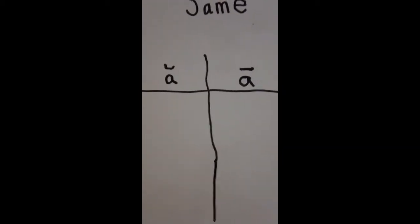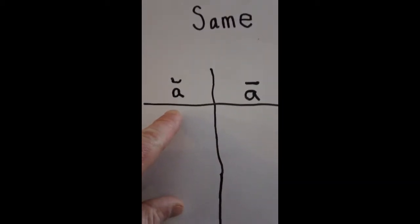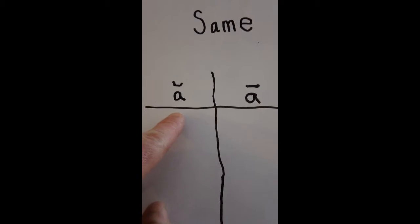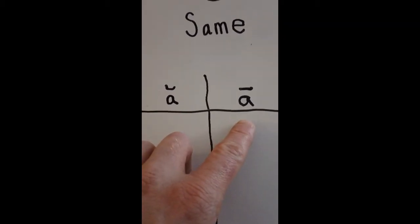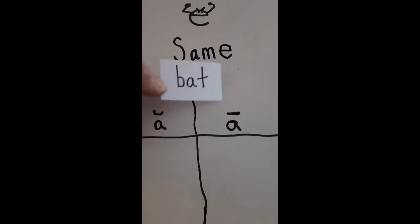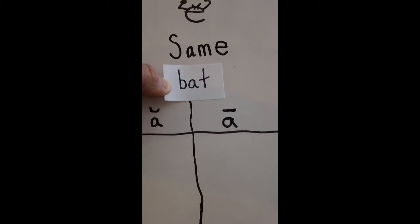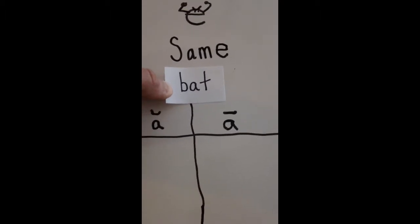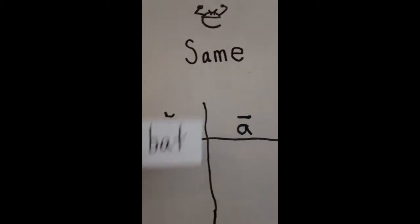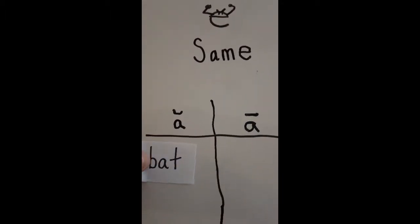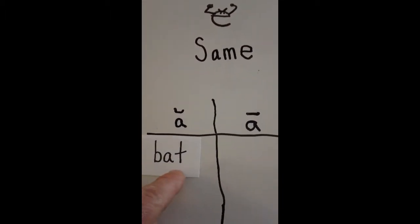This t-chart shows how the bossy E will make vowels that normally say a short A sound say their name instead. With some words from the book, I have the word bat. Bat does not have a bossy E, so it still has its short A sound. Bat.